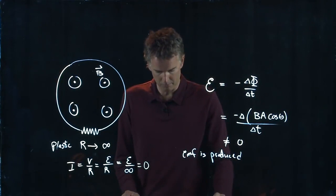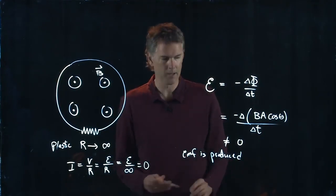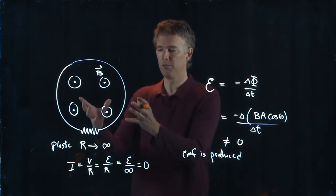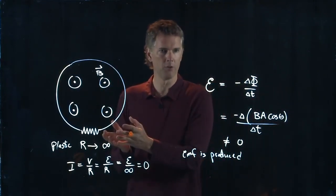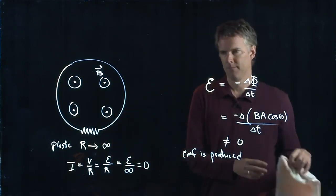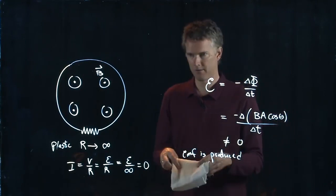I like the last one as well. Let's click that and submit it. And that is indeed correct. Okay? EMF is produced but no current flows because the resistance is infinite. Sarah, is that okay?